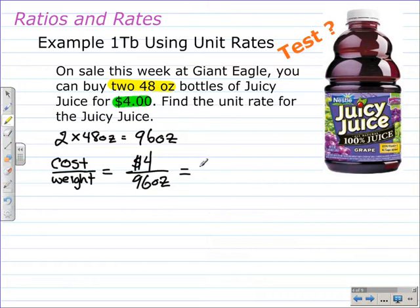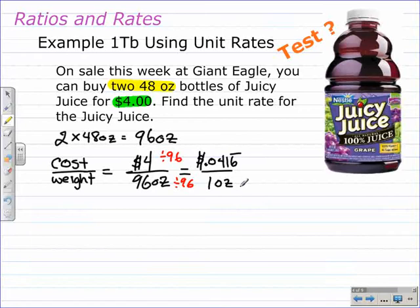Like we did in the last problem, we're going to write this so it has a denominator of 1, getting the price for 1 ounce. We divide both by 96. 96 divided by 96 is 1, and 4 divided by 96 gives us 0.0416 with the 6 repeating. The unit rate for this Juicy Juice on sale at Giant Eagle is 0.0416 dollars per ounce, or just over 4 cents per ounce.